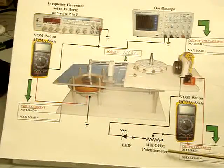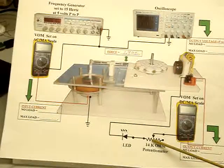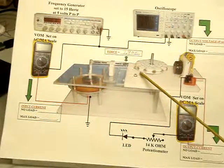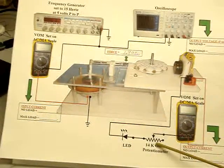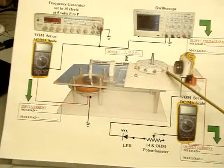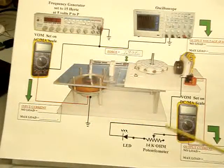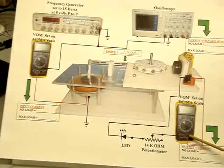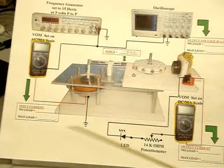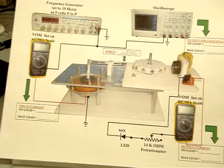And the plan is that we'll adjust the load. We'll start this, run it, and we'll adjust the load until it stalls. When it stalls, we'll read the input current at the point it stalls, the output current, and we'll be able to get a ballpark efficiency based on the input current and the output current.